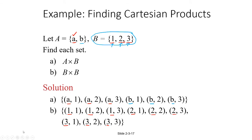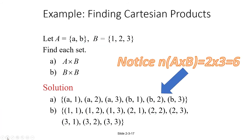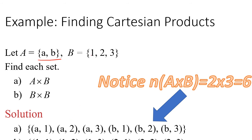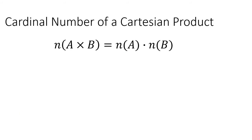One thing we can observe about Cartesian products is the relationship between the cardinalities of the original sets — the number of elements in the original sets — and the number of elements in the Cartesian product. Notice that the number of elements in A cross B turned out to be 6. It makes sense because there were 2 elements in set A, and each one had to be matched with each of the 3 elements in set B, giving us 2 times 3, which equals 6 elements in the new set. This is actually a formula for the cardinal number of a Cartesian product.